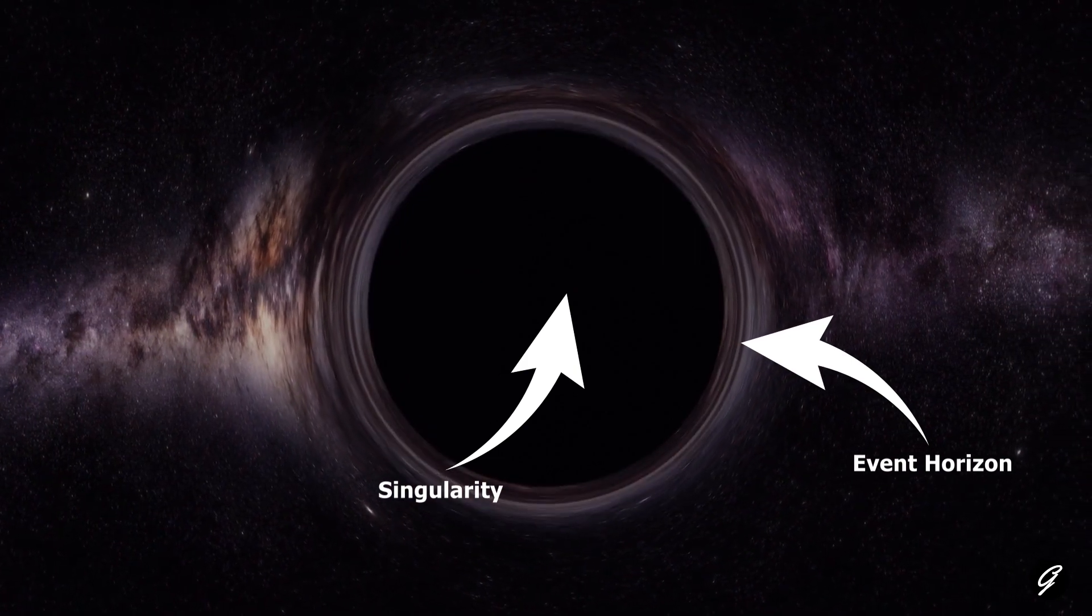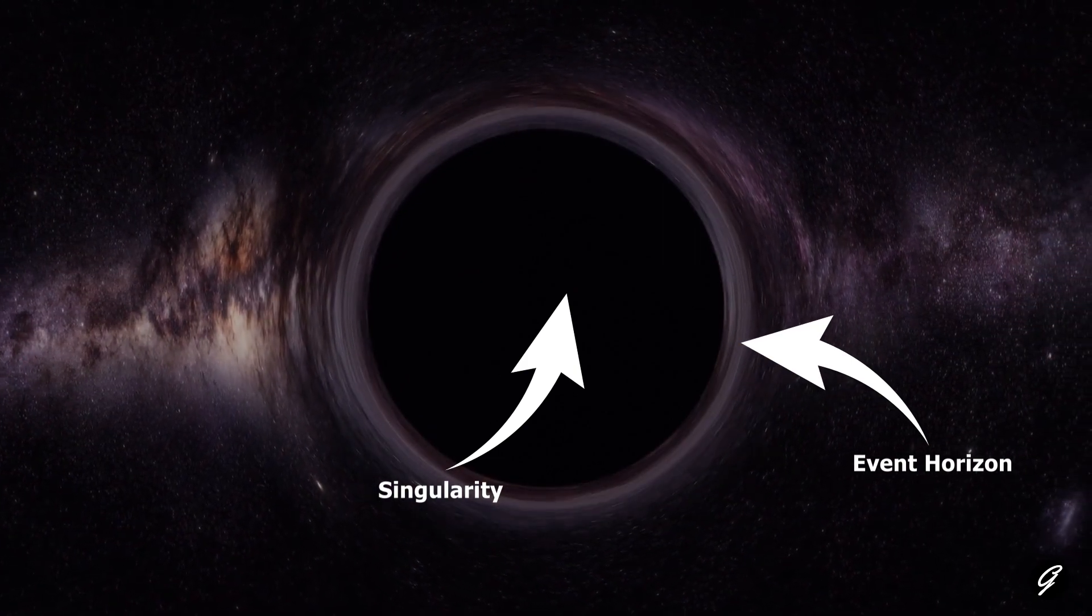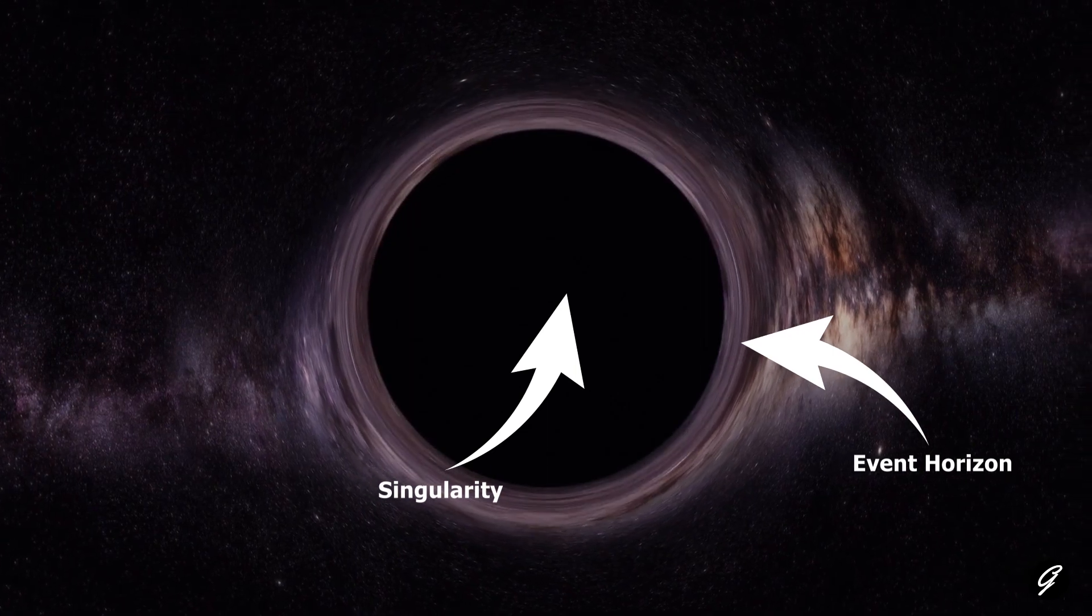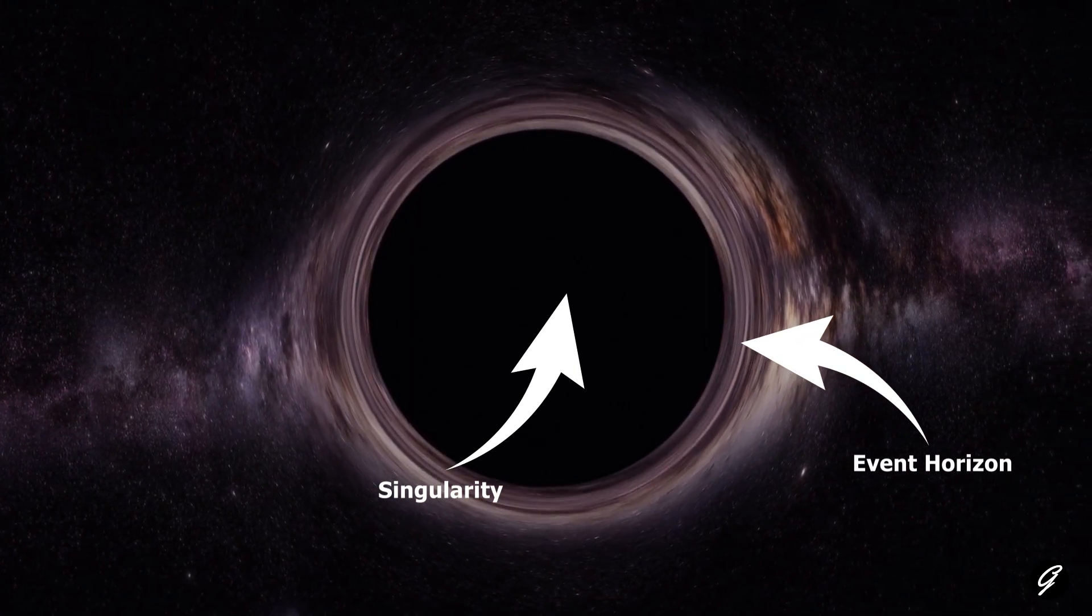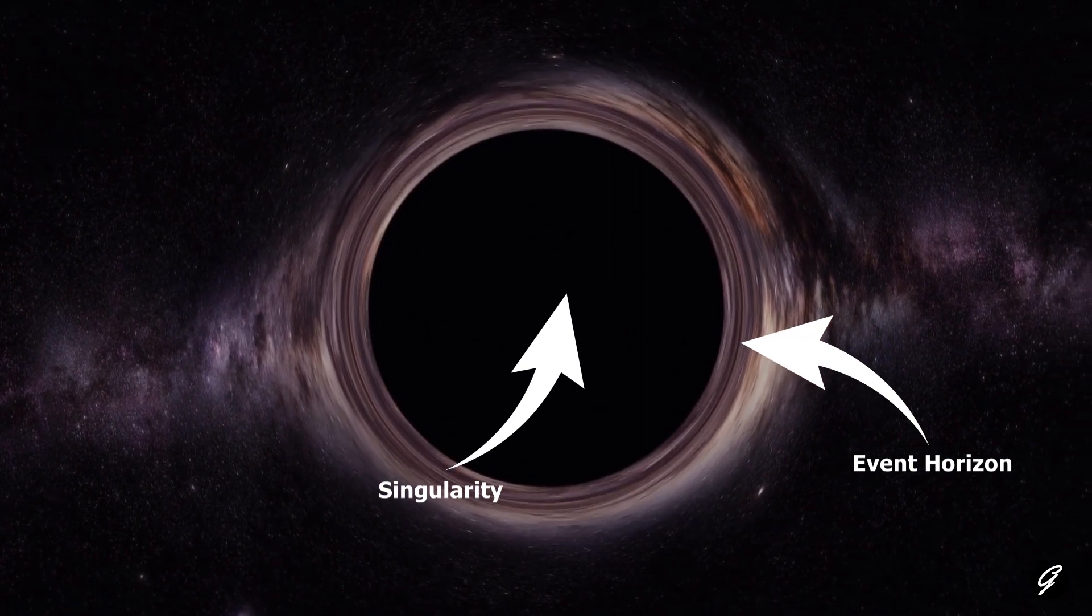The singularity is a point where the laws of physics as we understand them break down, and the density and temperature become infinite. At this point, the black hole is a singularity surrounded by an event horizon.